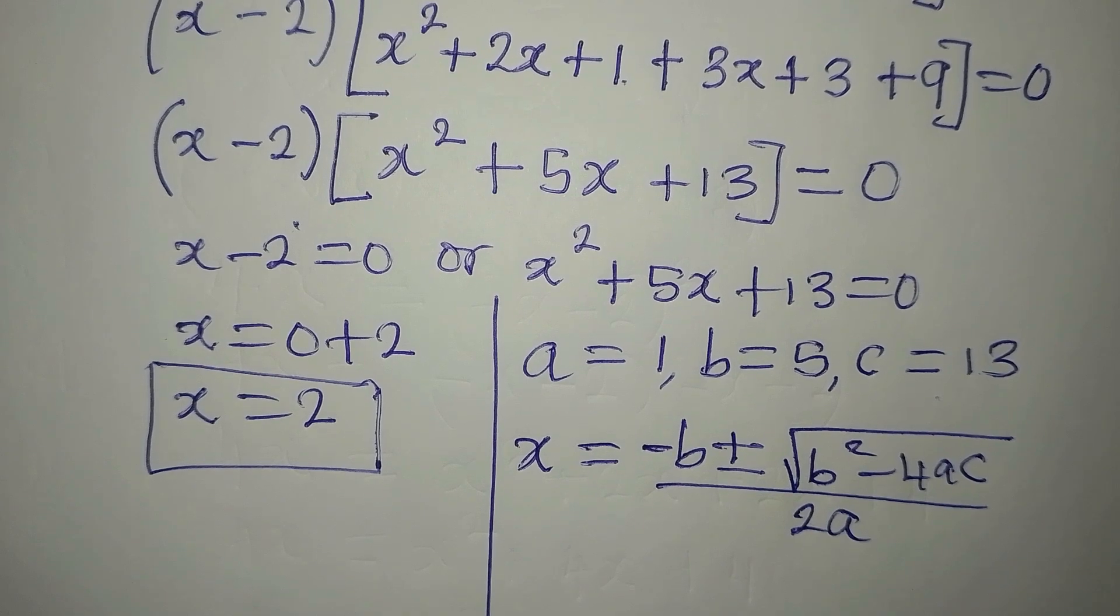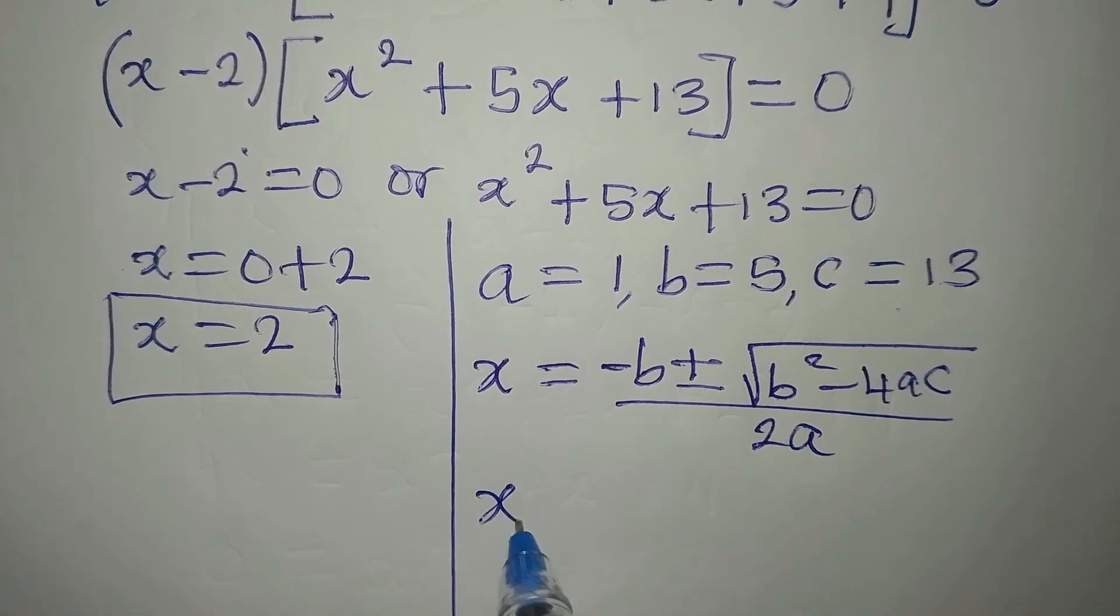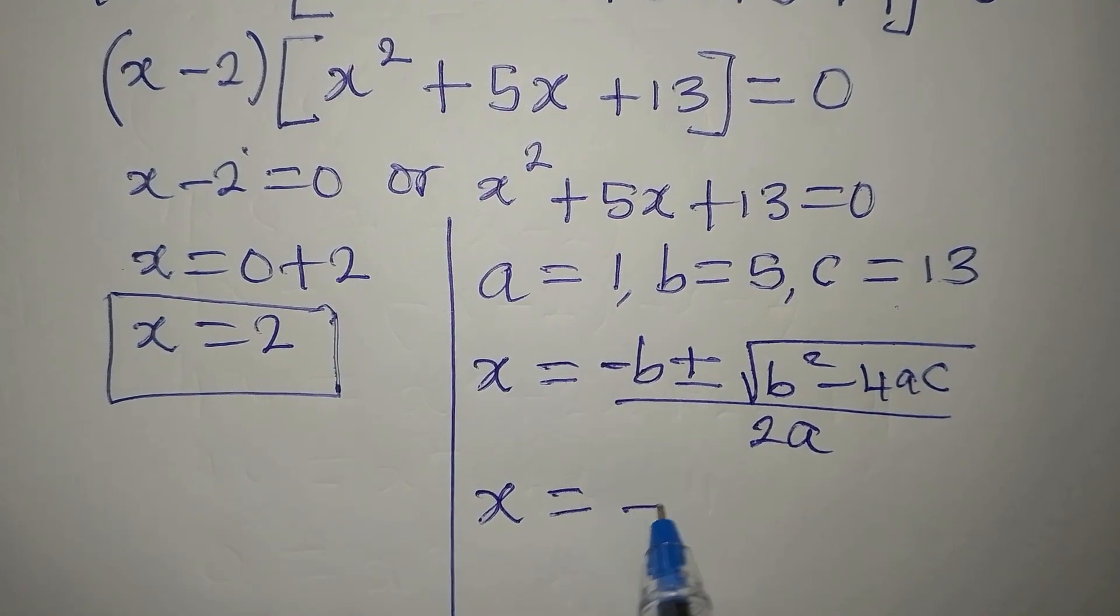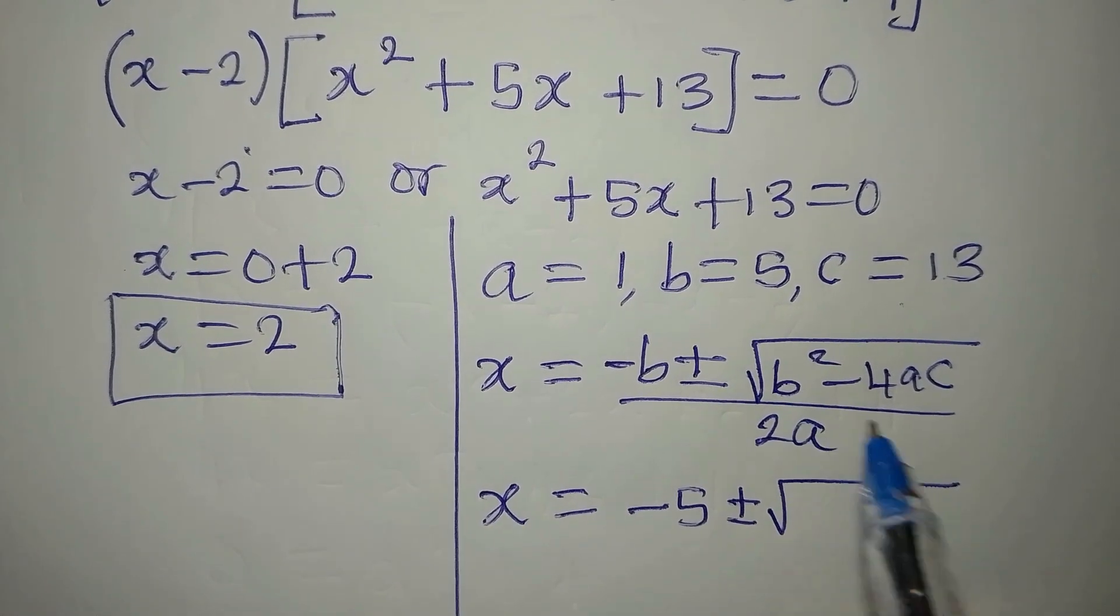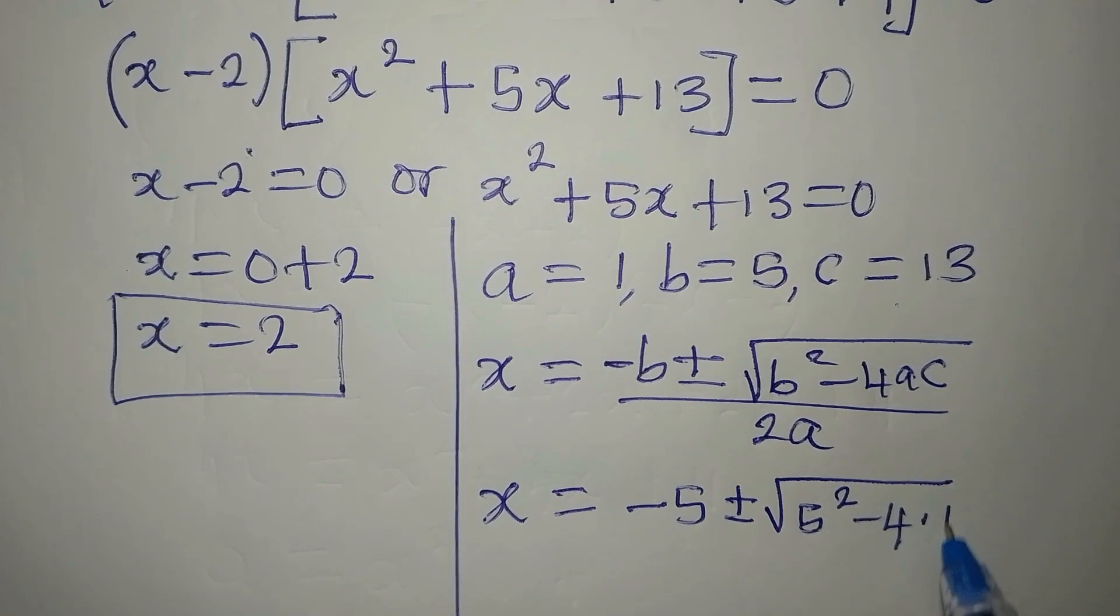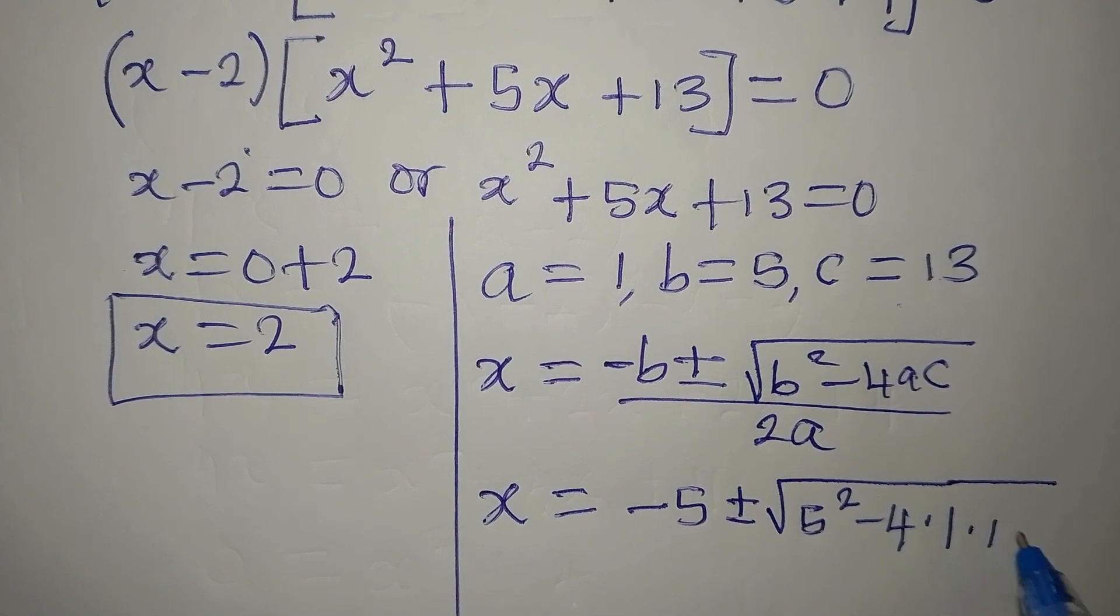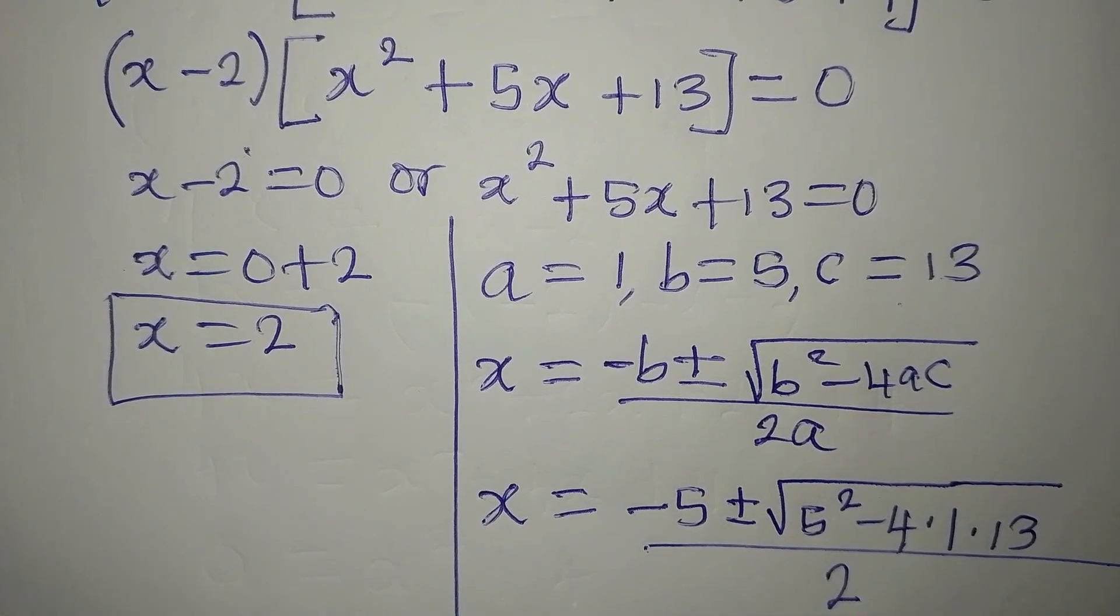Now what I will do is to substitute into this formula. So our x will now be minus b becomes minus 5, plus or minus square root of 5 squared minus 4 times 1 times 13. This is divided by 2.